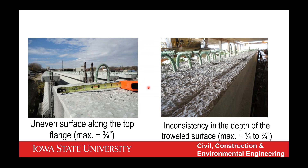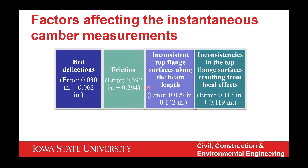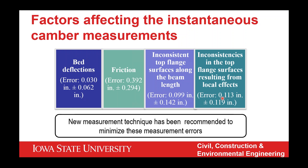Here are the four components affecting instantaneous camber: bed deflection, friction, and surface inconsistency. On average across many beams, bed deflection appears small. But friction clearly contributes more, and top surface inconsistency adds to other errors. The new measurement technique we developed essentially eliminates most of these problems identified in instantaneous camber measurement.